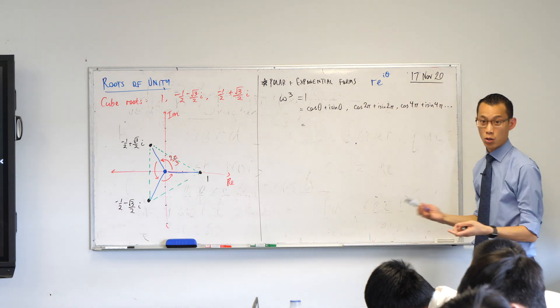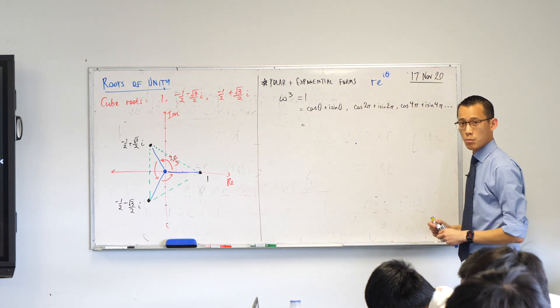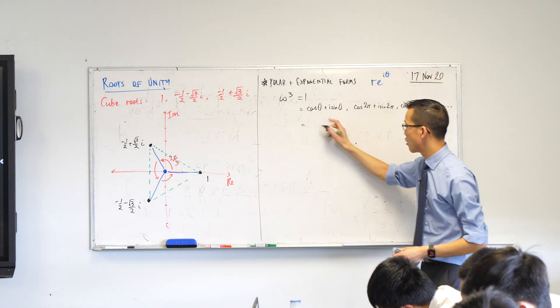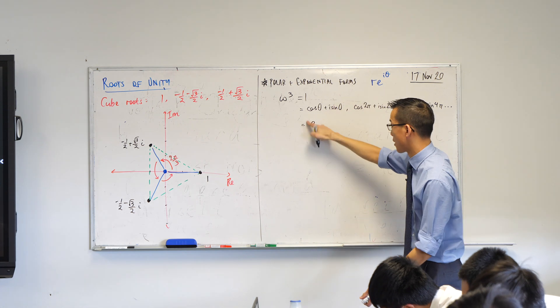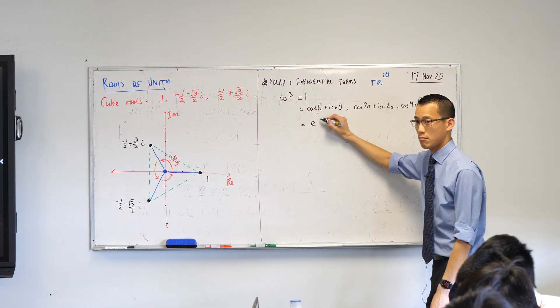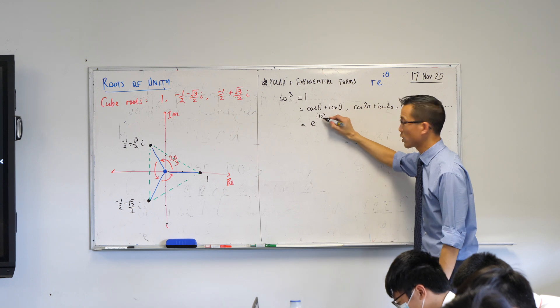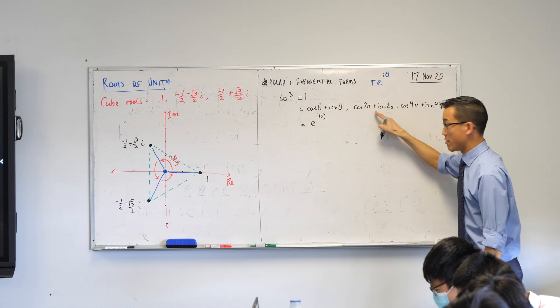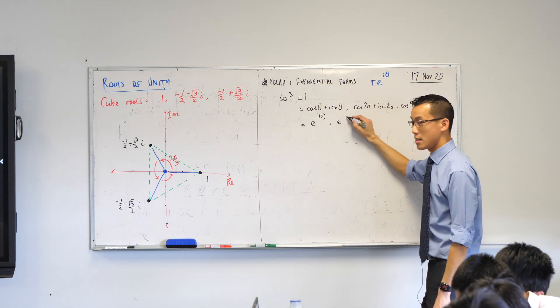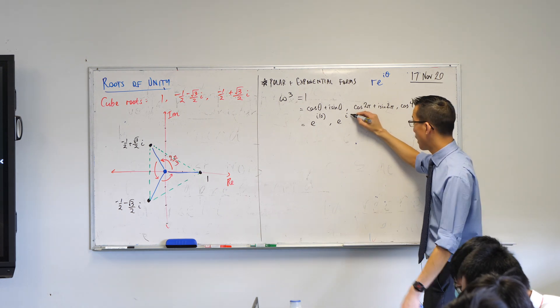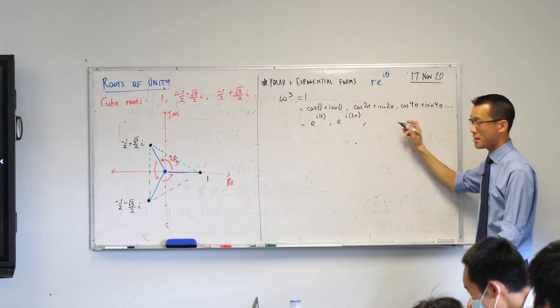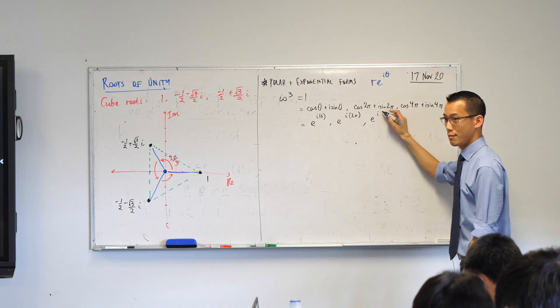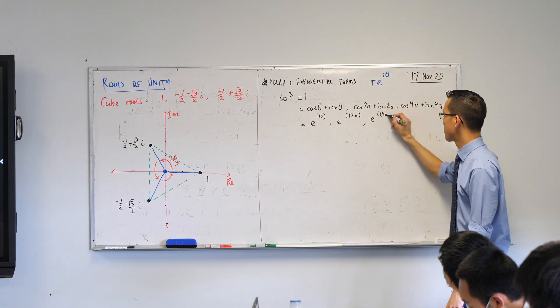What did we say the modulus was? 1. So this first one here is just e, I don't need to write 1, e to the i 0. There's the first one. I can rewrite this one as well. It's going to be e to the i 2 pi. New angle. And then the last one I have on my row is e to the i 4 pi. Dot dot dot.